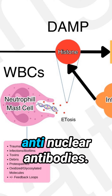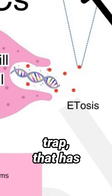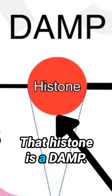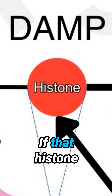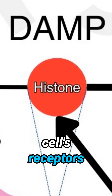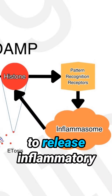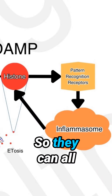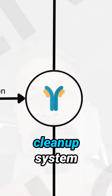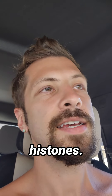For example, anti-nuclear antibodies. A neutrophil releases extracellular traps that have histones in them. That histone is a DAMP. If that histone attaches to another cell's DAMP receptor, it will cause that cell to release inflammatory mediators so they can all communicate. Antibodies are the body's cleanup system for those excess histones.